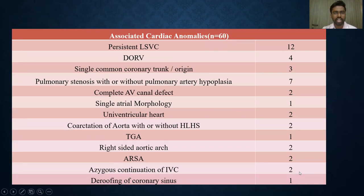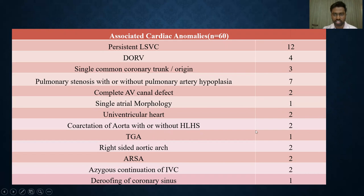Among associated cardiac anomalies, persistent left superior vena cava was the most common, seen in 12 patients, followed by pulmonary stenosis with or without pulmonary artery hypoplasia seen in 7 patients, and DORV seen in 4 patients. Other associated anomalies included single common coronary trunk in 3 patients, complete AV canal defect in 2 patients, single atrial morphology in 1 patient, univentricular heart in 2 patients, coarctation of aorta with or without hypoplastic left heart syndrome in 2 patients, transposition of great arteries in 1 patient, right-sided aortic arch in 2 patients, ARSA in 2 patients, azygous continuation of IVC in 2 patients, and de-roofing of coronary sinus in 1 patient.